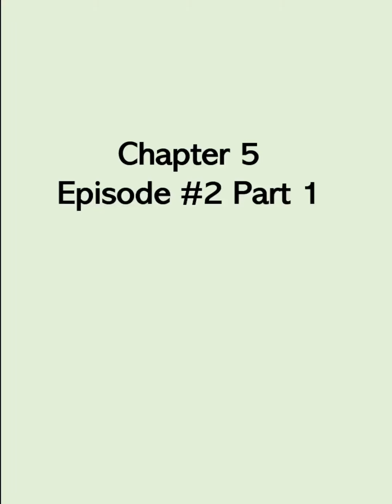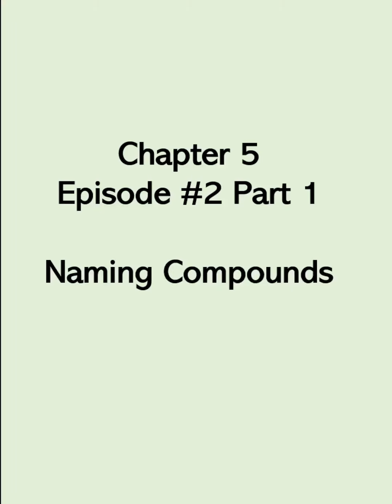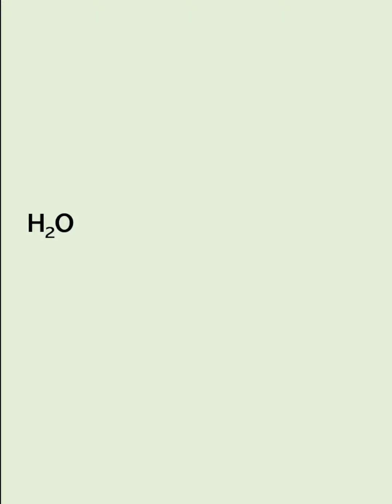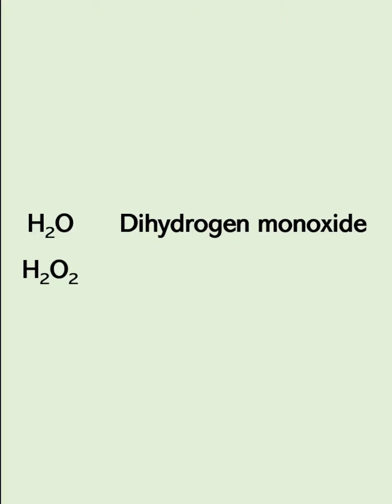This is chapter 5, episode 2, part 1, about naming compounds. So here we have the chemical formula H2O. What do you think is the name of this compound? This one is actually dihydrogen monoxide. How about this one, H2O2? This is actually dihydrogen dioxide.